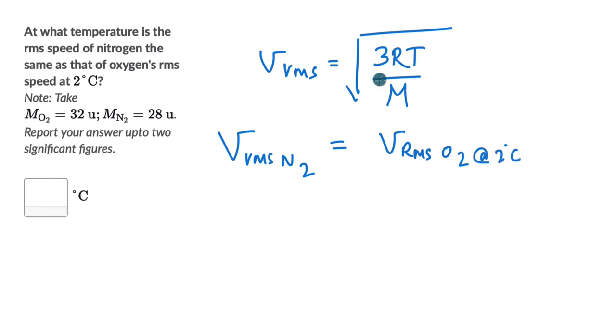So what we can do is we can equate this equation for both of them. So on the left hand side we can write square root of 3RT divided by the molecular mass of nitrogen, this is equal to 3R into T.